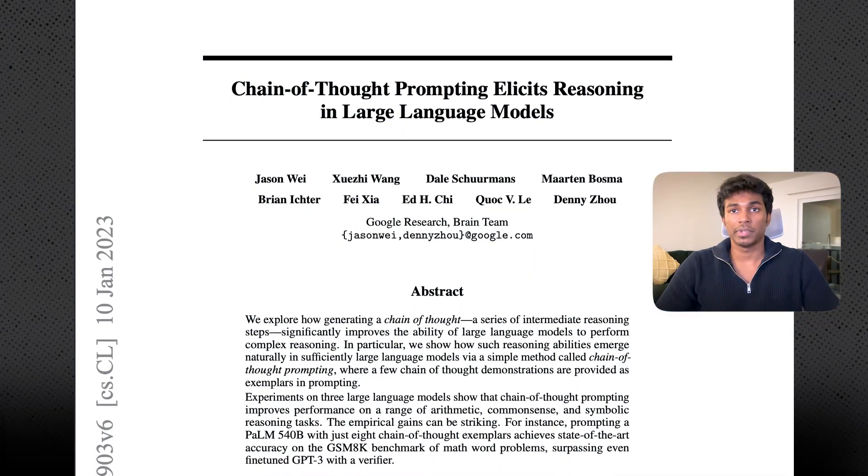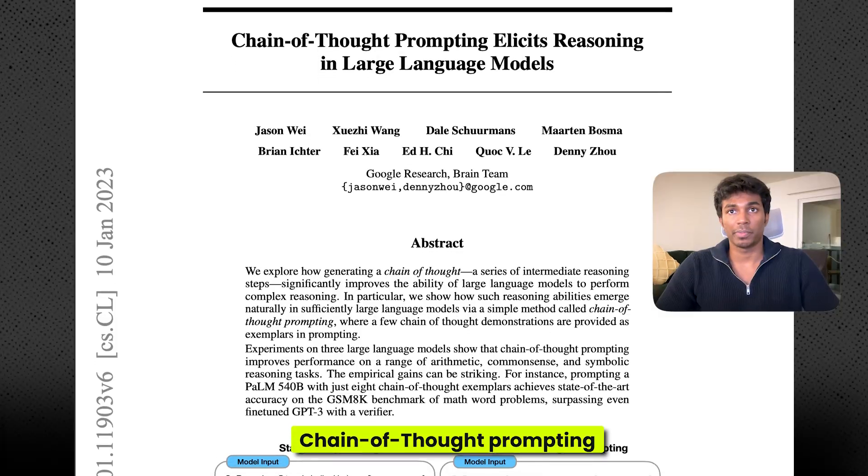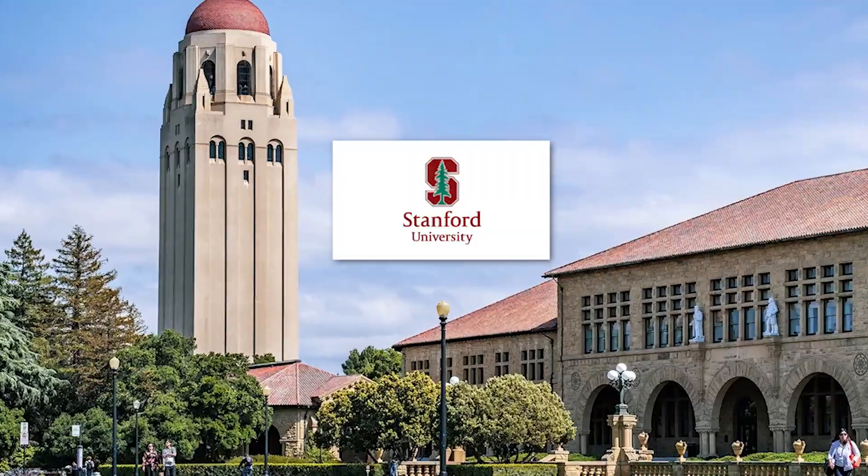This program has produced researchers behind ideas like chain of thought prompting and many others who are now senior researchers in frontier AI labs working on Gemini and ChatGPT. A lot of AI residents are also doing PhDs at top programs like MIT and Stanford.